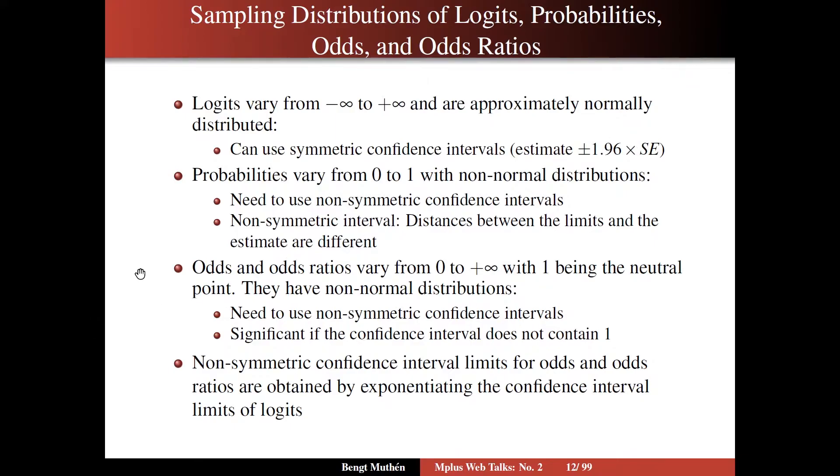Odds and odds ratios vary from 0 to plus infinity. We note that 1 is the neutral point. For instance with odds ratios, when there is no relationship between the two variables. They have non-normal distributions as well, so you need to use a non-symmetric confidence interval. In this case, you have significance if the confidence interval does not contain 1, the neutral point.